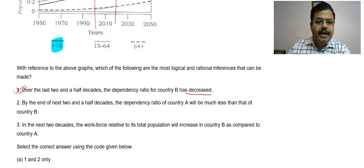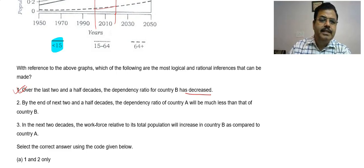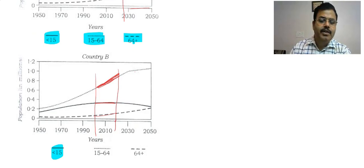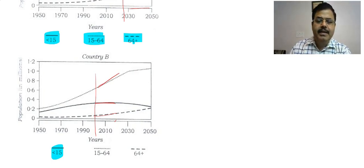So the dependency of A will not be much less than country B — that statement is wrong. In the last two decades, the number of workforce in B is going to be much more, so dependency in B will be less, and dependency in A will be more. Therefore option B is not correct.